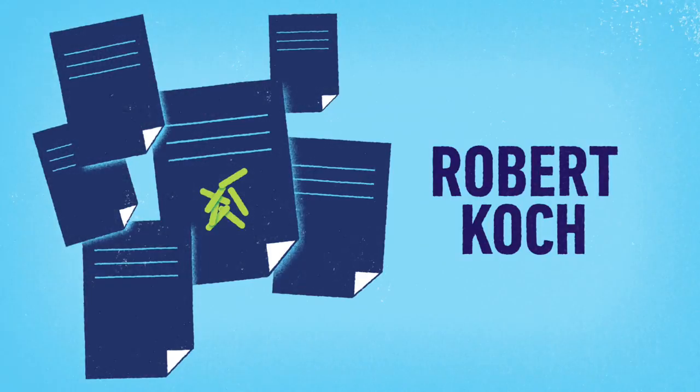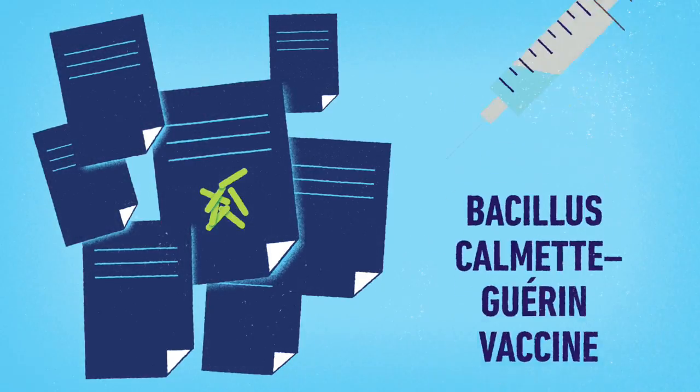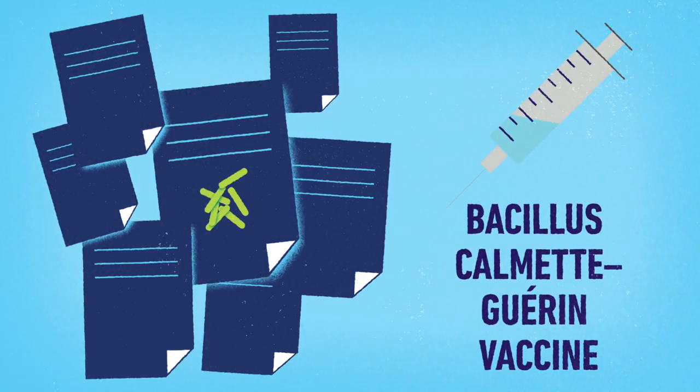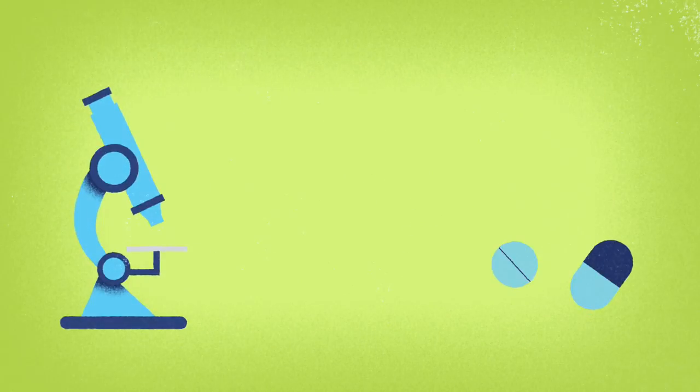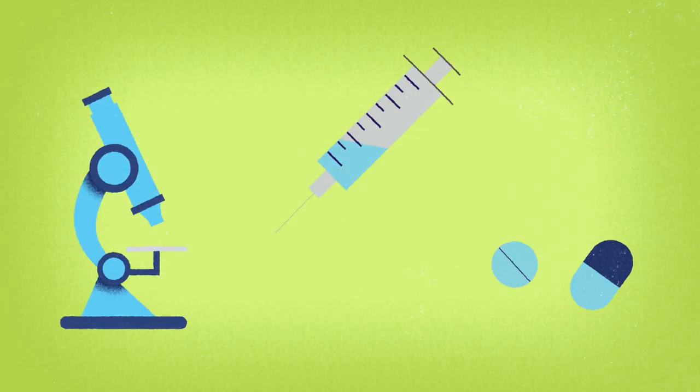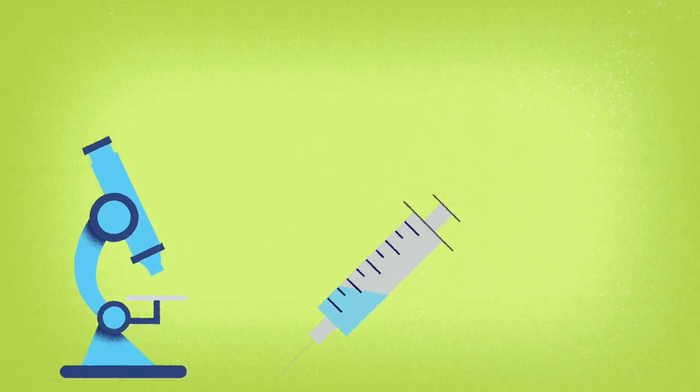This and other scientific advancements led to the development of the BCG vaccine in 1921, which is still used today. TB's long history hasn't ended. The fight against it is ongoing, but it is hoped that continued advancements in antibiotics, diagnosis and vaccines will help make TB history.